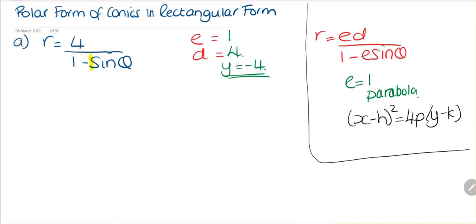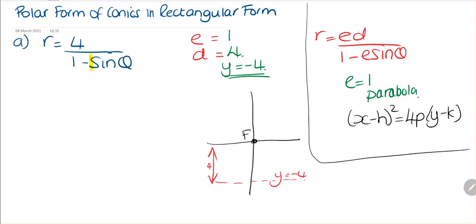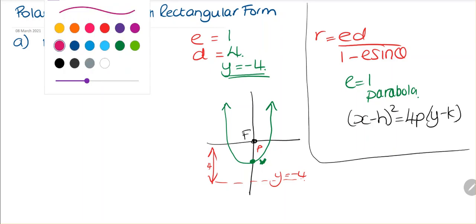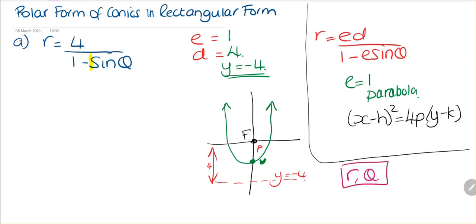Let's sketch what it's going to look like. Here's our focus, and we know our directrix is at y equals minus 4. This distance here is going to be 4. The shape of our parabola is going to open upward, and this is going to be our vertex. We need to find that point, and this distance here will be p for our equation.